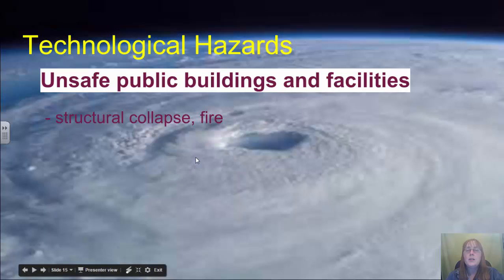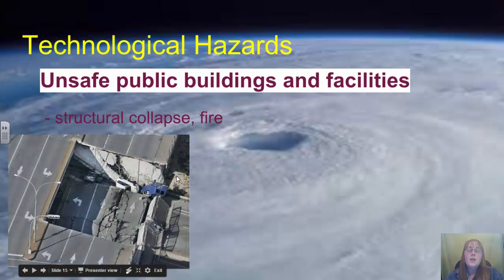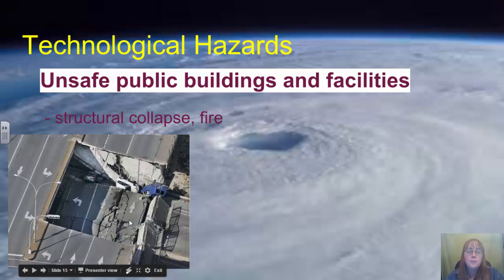The next technological hazard involves unsafe buildings and facilities — for example, structural collapse. Structures can have issues because they were poorly built, not following code, built using shoddy materials, or poorly maintained and inspected. One example is an overpass bridge in Montreal that was poorly maintained — inspectors failed to notice corrosion from salt on the beams, causing a section to collapse. Afterward, inspectors found several other bridges in Montreal and across Canada in perilous conditions.